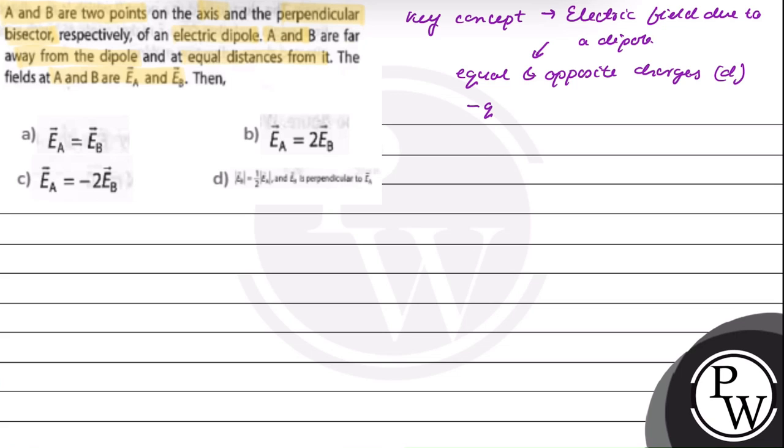Direction from minus Q to plus Q is the direction of the dipole moment. Due to the electric dipole, there is an electric field around it, which varies along the axis of the dipole and along its equatorial plane.